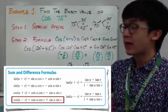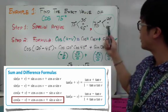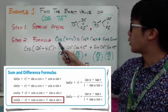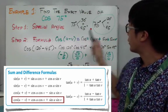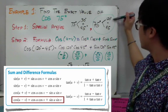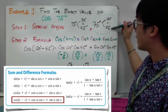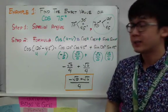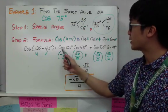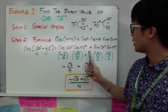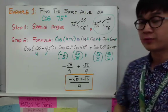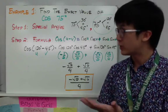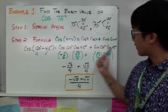Let's use the combination 120 minus 45 degrees. Step two is to apply the formula. Since we're using a difference, we apply the cosine difference formula: cosine(u − v), where u is 120 degrees and v is 45 degrees. Plugging into the formula gives cosine 120° times cosine 45° plus sine 120° times sine 45°. Now we use the unit circle to find the values of these special angles.